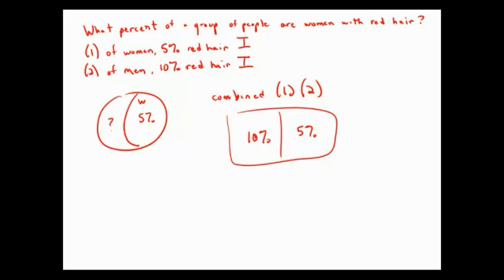This group could be almost all men with just a few women, or it could be almost all women with just a few men. We have no idea. So even when we combine it, everything is still insufficient. We don't have enough information to answer the question, and this corresponds to answer choice E.